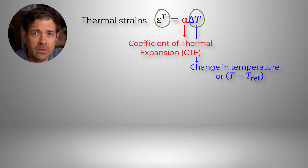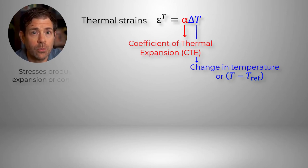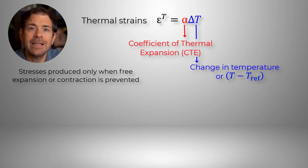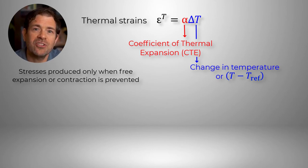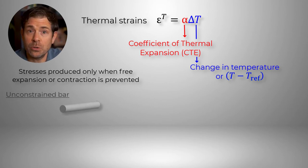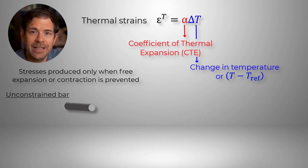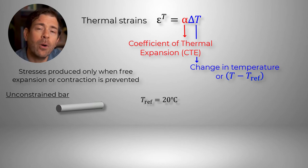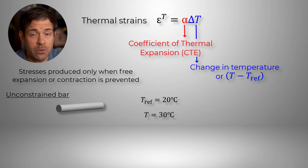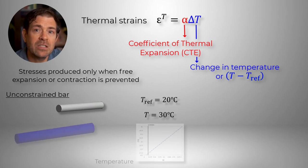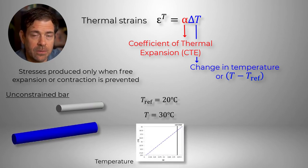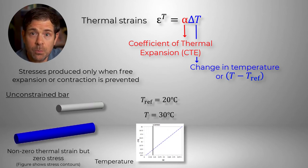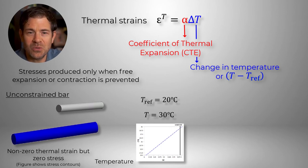But does that always lead to stresses as well? As discussed before, thermal strains lead to stress when the structure is prevented from freely expanding or contracting. Say we have a bar with uniform cross-section and no constraints applied. Let the reference temperature for the material of the bar be 20 degrees Celsius. If the bar is heated to a uniform temperature of 30 degrees Celsius, we can see that the bar can expand freely due to lack of any constraints. In this case, we see non-zero thermal strains, but since there are no constraints to prevent free expansion, the stresses produced are zero.